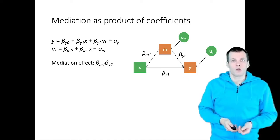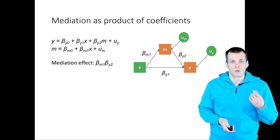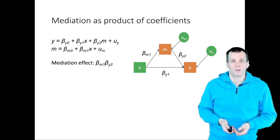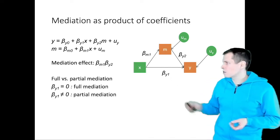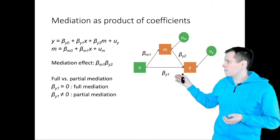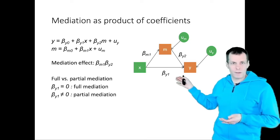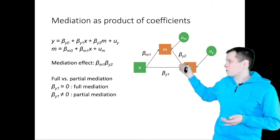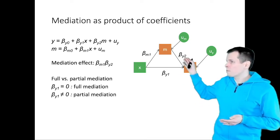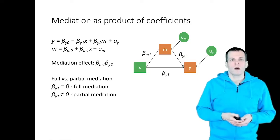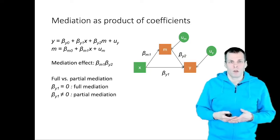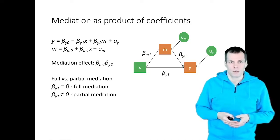Another thing that we learn is that there are two kinds of mediation: full mediation and partial mediation. If the direct effect from x to y is zero after controlling for m, we have full mediation. If it's non-zero, we have partial mediation.